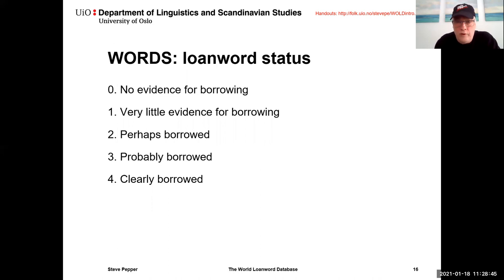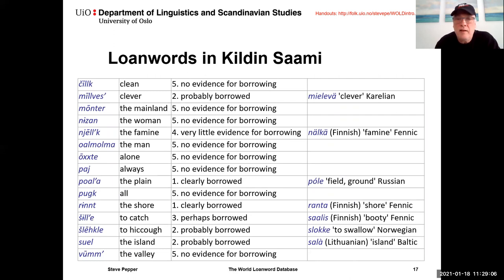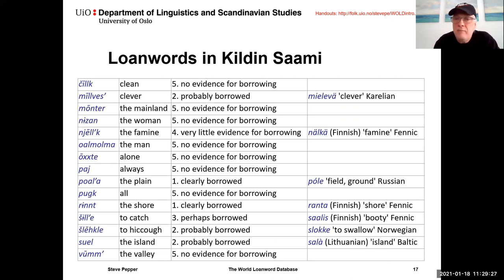Now, what about loanword status? There are five different grades: zero means no evidence for borrowing; one, very little evidence; two, maybe borrowed; three, probably borrowed; four, clearly borrowed. In Kildin Sami, words in category zero — no evidence for borrowing — include for example 'chieft,' meaning clean. Category three — probably borrowed — includes 'mitvesh,' said to be borrowed from Karelian 'mieleva,' meaning clever. So for every word in the Kildin Sami vocabulary, you have information about whether or not it is borrowed, and if so, which language it's borrowed from.